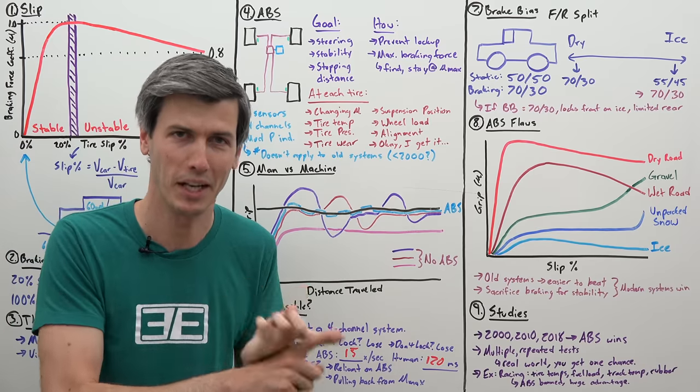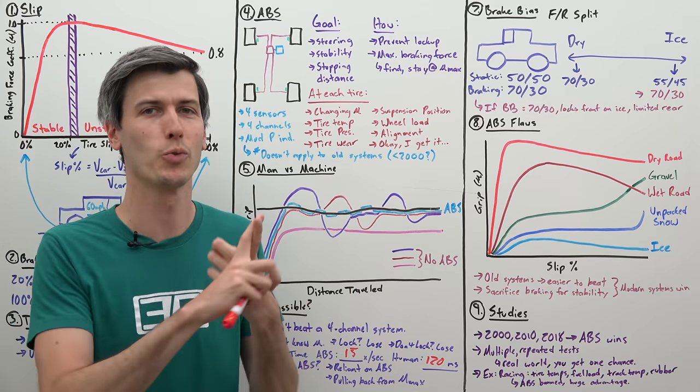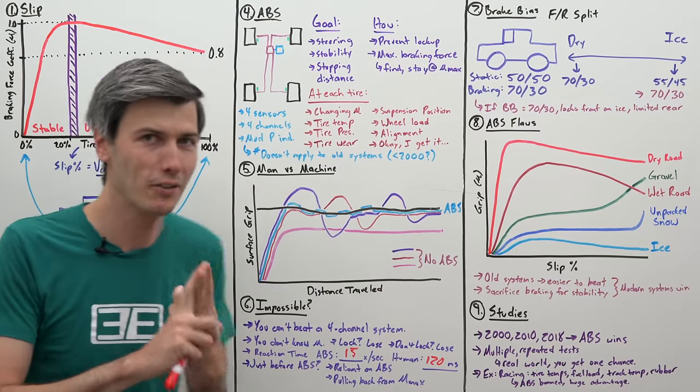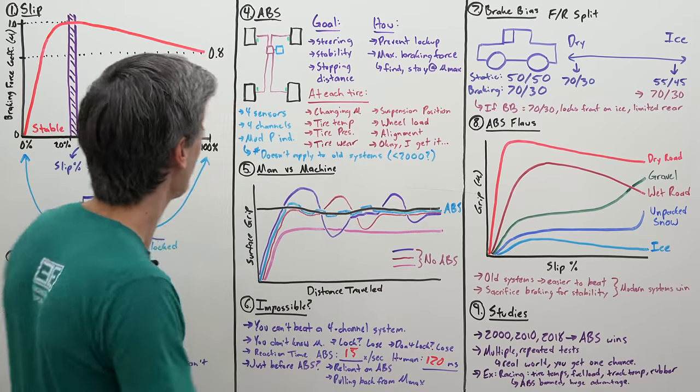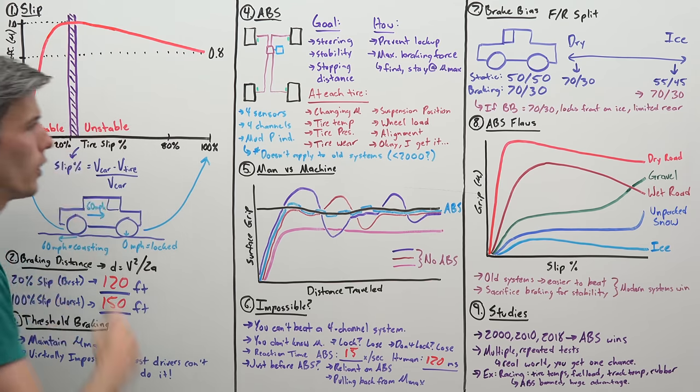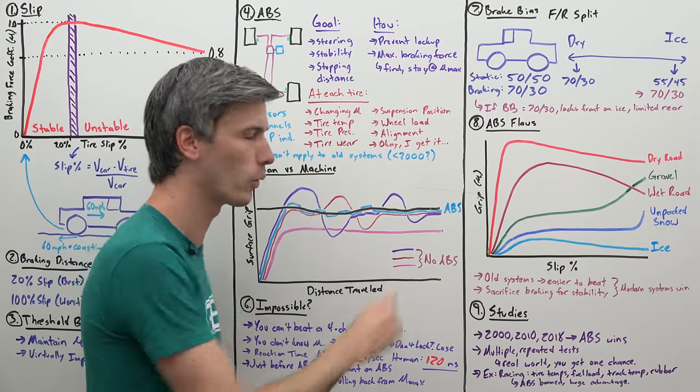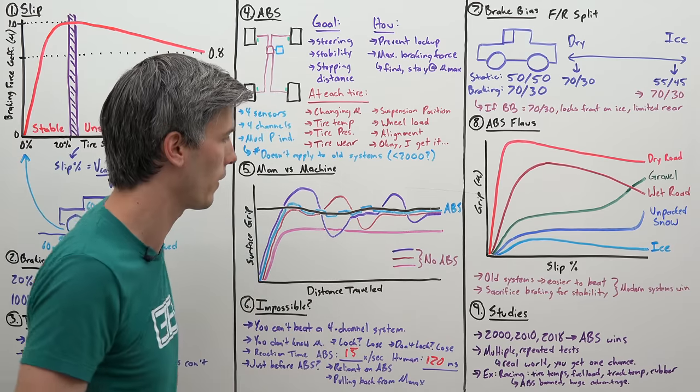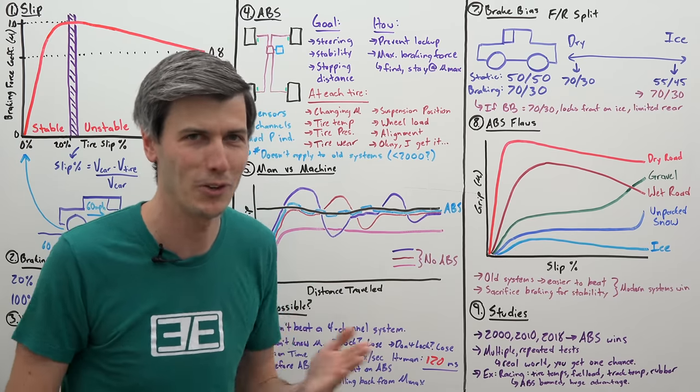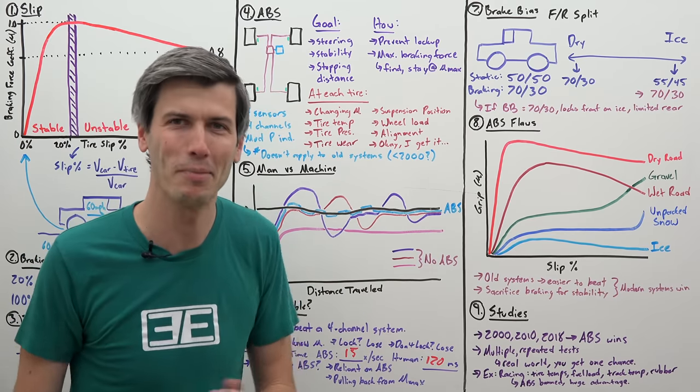And second of all, if you start backing off of that, you don't know how much you've actually backed off. So you're going to start pulling yourself back down this curve and then again, leaving grip on the table. If you start to back off of ABS, ABS is finding the sweet spot. It's finding the perfect spot to slow down. And then you're saying, no, I know better. It's crazy.